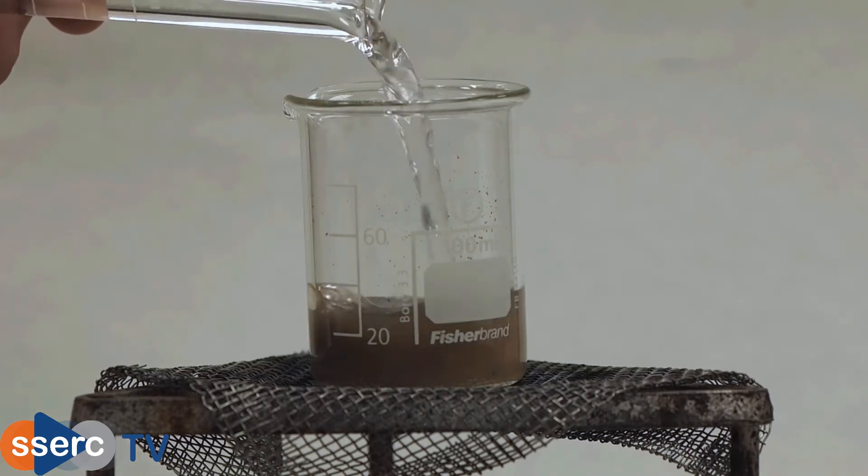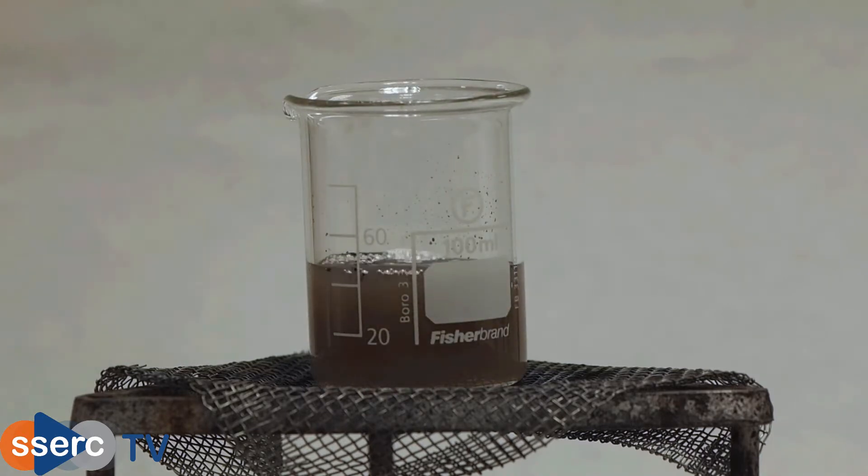In preparation, you need to ash, i.e. burn, a known mass of the food. We have ashed two grams of tea leaves for you. Now we need to extract the iron from the ash residue.